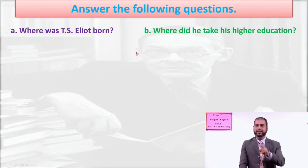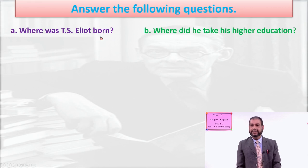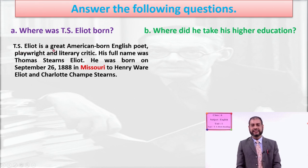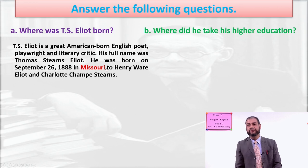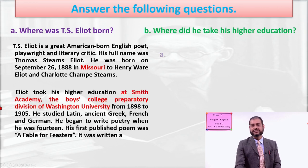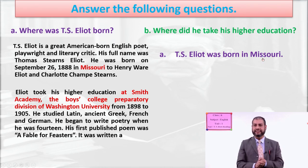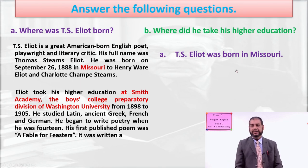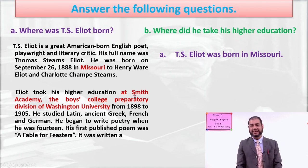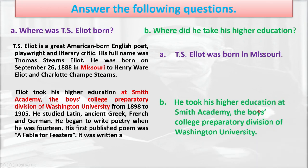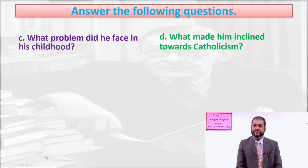Now answer the following questions. Here is a model: Where was T.S. Eliot born? You can find it in the first paragraph — he was an American-born English poet, born in Missouri. So you write: T.S. Eliot was born in Missouri. Another question: Where did he take his higher education? From the second paragraph — at Smith Academy, the boys' college preparatory division of Washington University. Write: He took his higher education at Smith Academy, the boys' college preparatory division of Washington University.